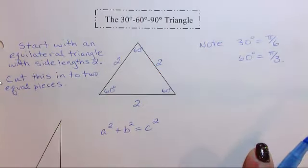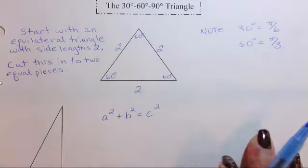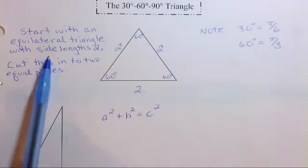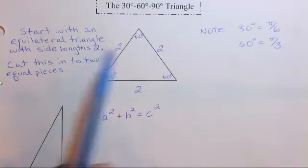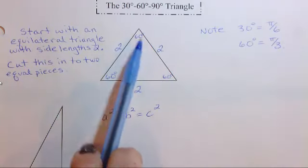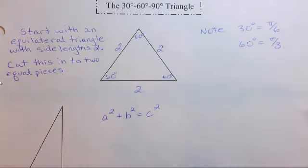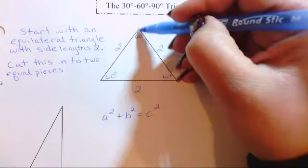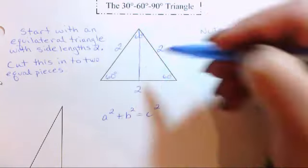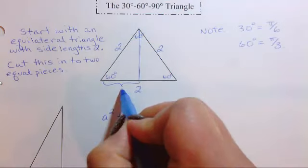Now over here with this 30-60-90 triangle, we're going to start with an equilateral triangle. It has side lengths of 2, so this is our equilateral triangle. All angles are 60 degrees.